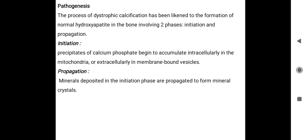Next, the mechanism of dystrophic calcification. The process has been linked to the formation of normal hydroxyapatite in bone, involving two phases. The first is the initiation process, where calcium phosphate accumulates in the cell membrane. The second is the propagation process, where minerals are converted into mineral crystals. So dystrophic calcification produces hydroxyapatite.